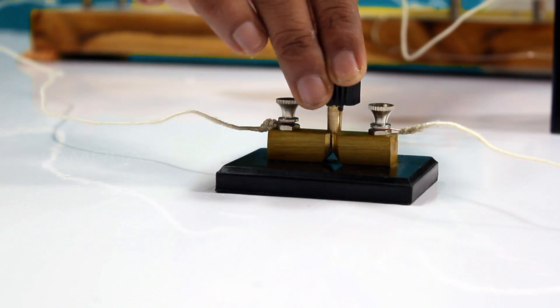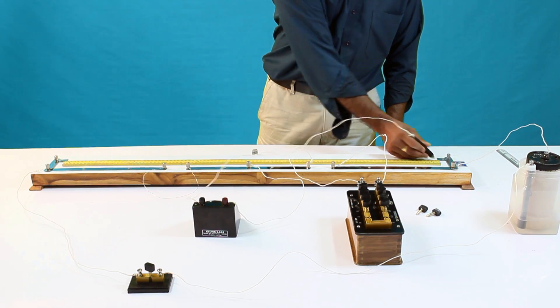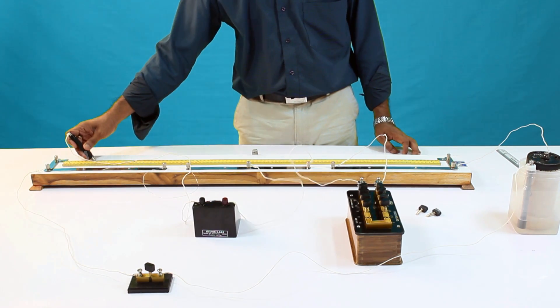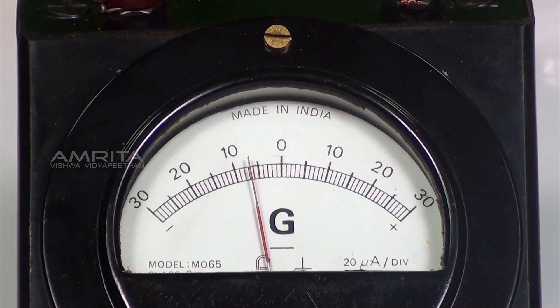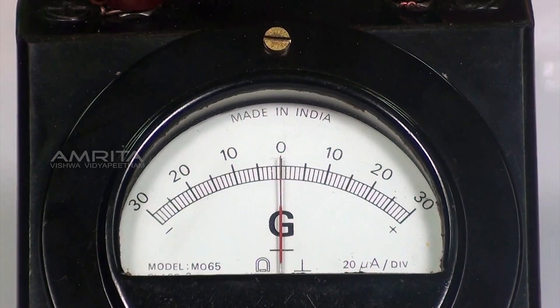Now, insert the key and press the jockey near A and then near B. If the galvanometer deflections are in the opposite directions, then the connections are correct.